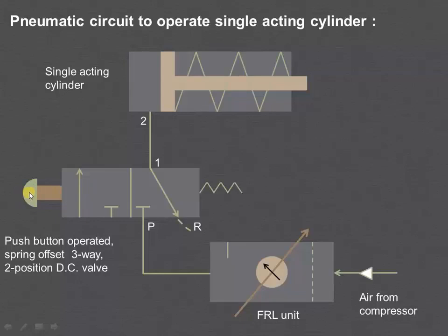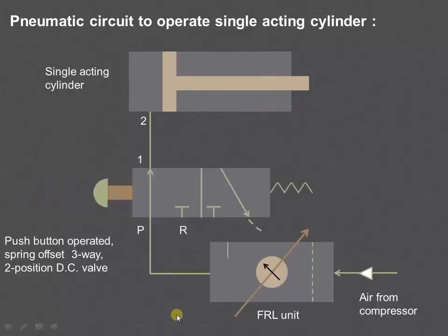So when the push button is operated, they will be in the left envelope board. So as you can see over here, now the air from compressor, high pressure air from the compressor will enter into FRM.